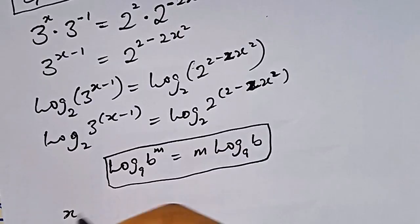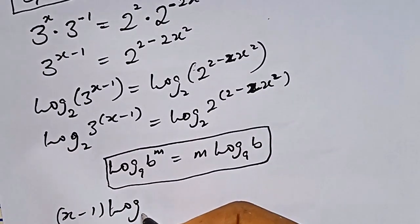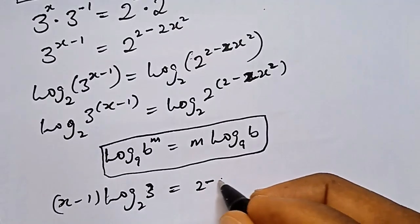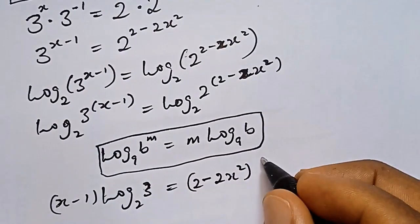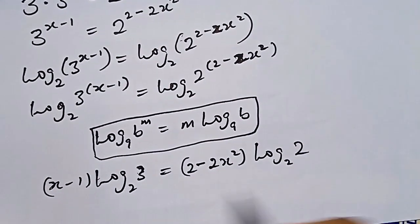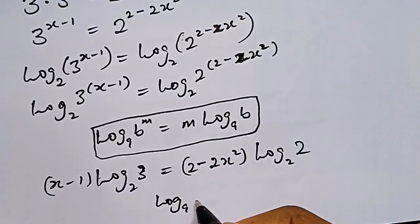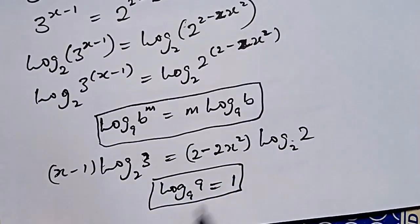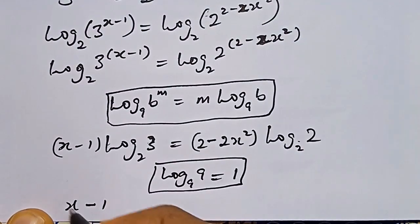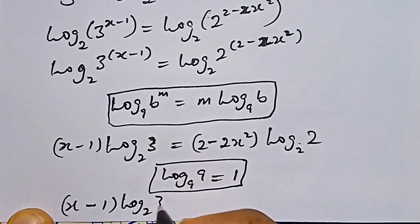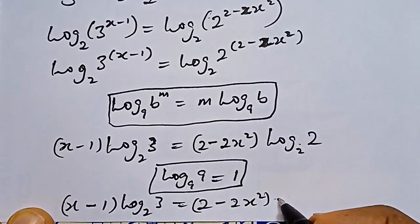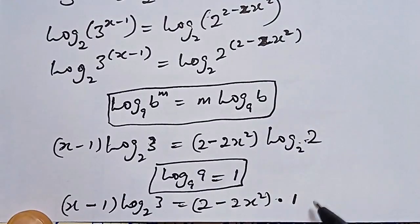So we have X minus 1 times log base 2 of 3, equals 2 minus 2X squared times log base 2 of 2. Since log base A of A equals 1, log base 2 of 2 equals 1. So the right-hand side simplifies to 2 minus 2X squared times 1, giving us X minus 1 times log base 2 of 3 equals 2 minus 2X squared.